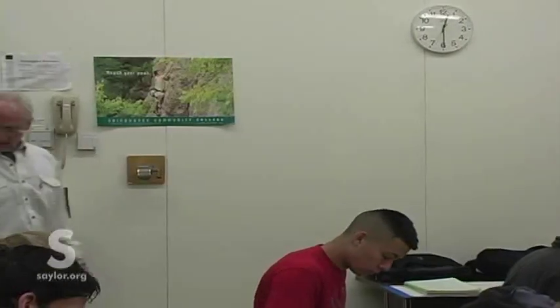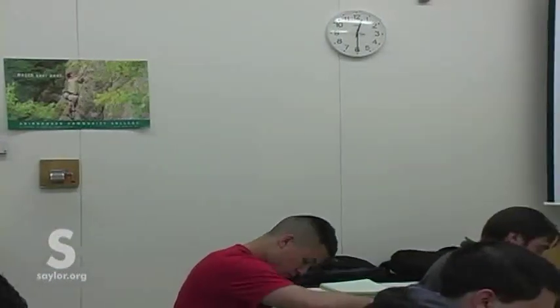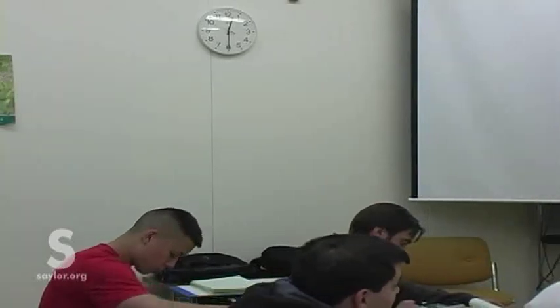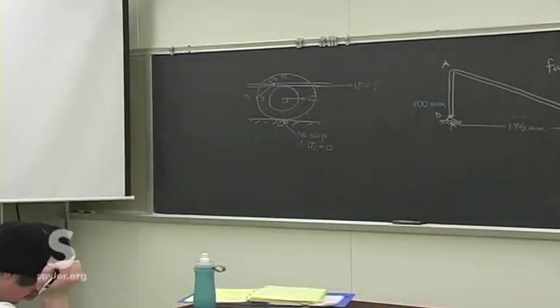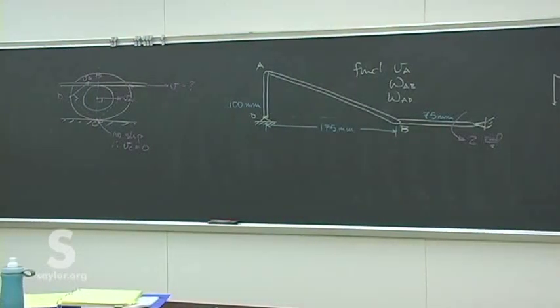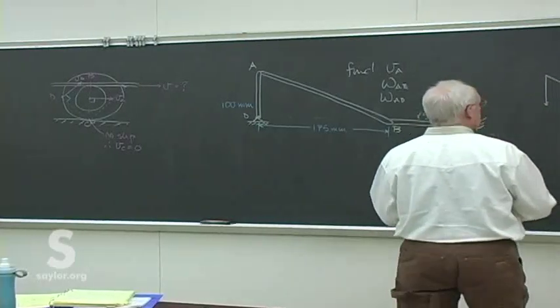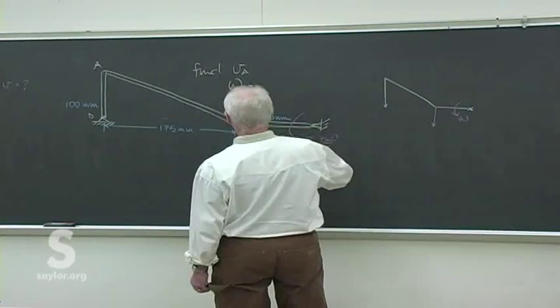Locate the instantaneous center — label it point C if you wish. Start with two known velocities. If you don't get those right, nothing else is right. With this arm rotating and fixed at one end, we know that point B must be moving in that direction. The other point is A, which happens to be moving about D because D is fixed.